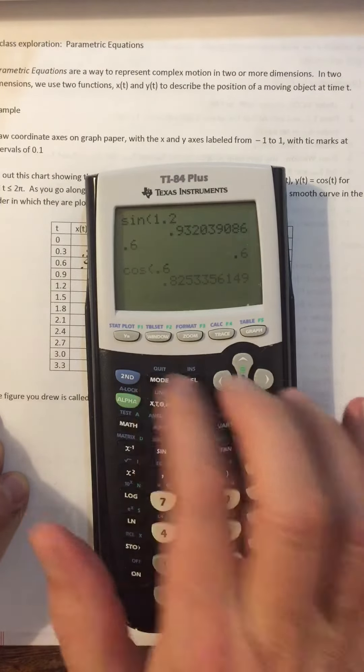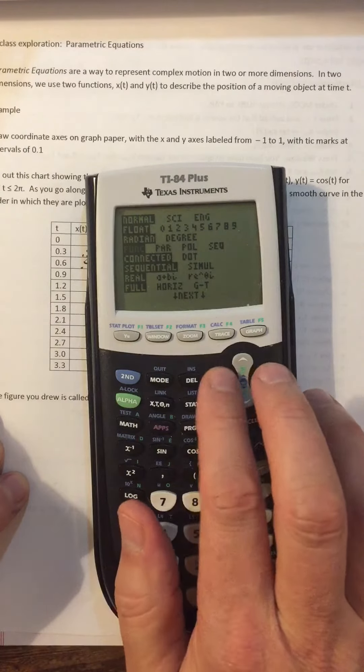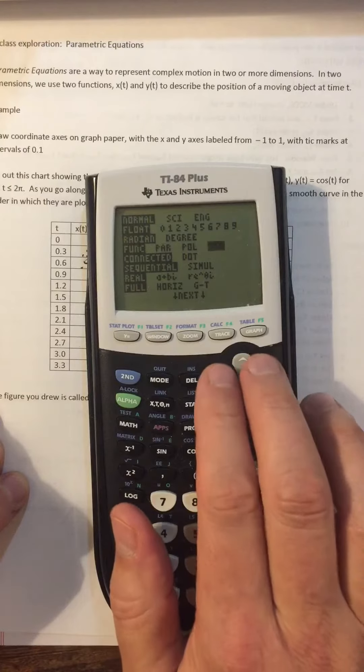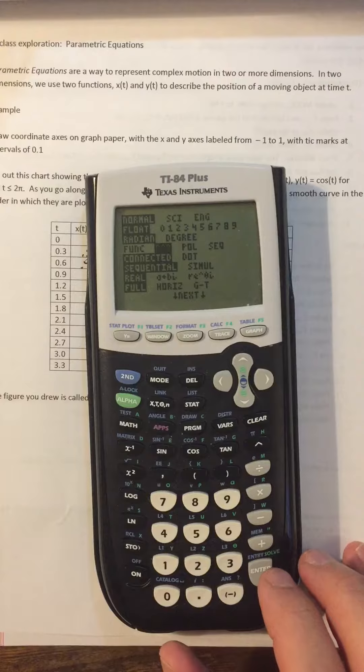So if I go to the modes and I go down to here where I've got func and pair and pole, this is for function, parametric, polar, and sequence. We will use all of these in this class. We'll start with parametric.